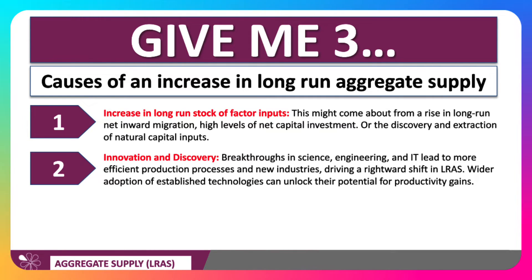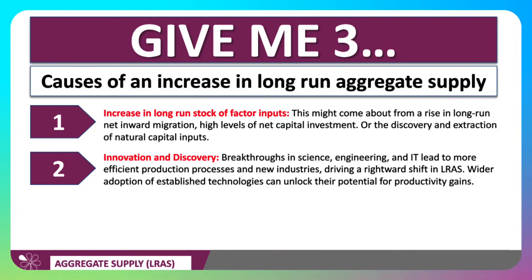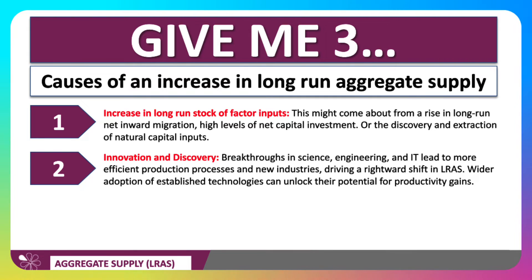A second key factor causing an increase in long-run supply would be innovation and discovery. This includes the positive spillovers — the benefits from breakthroughs in science, engineering and IT — hopefully leading to increased productivity, more efficient production processes, process innovation, and the development and expansion of new industries, all of which drive a rightward shift in aggregate supply.